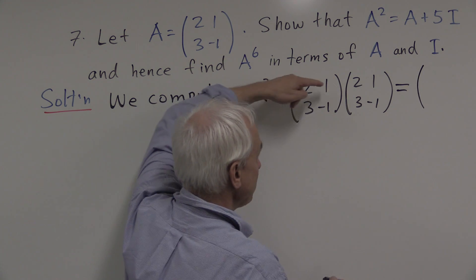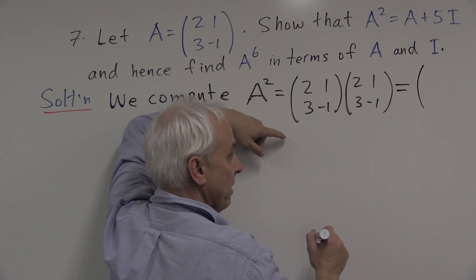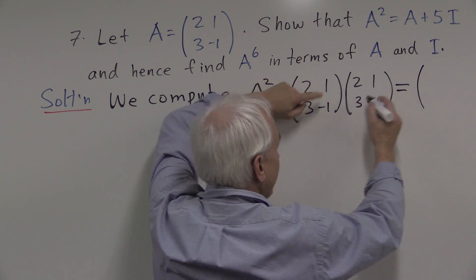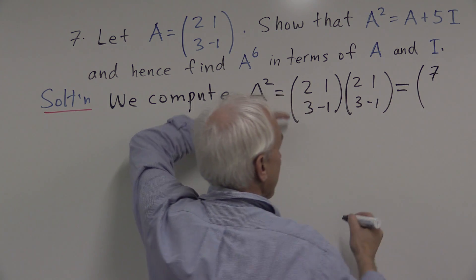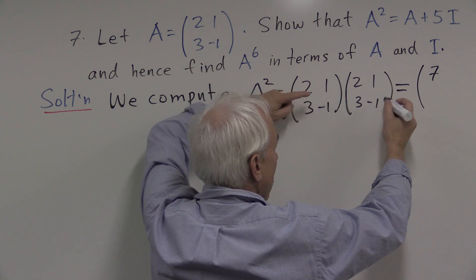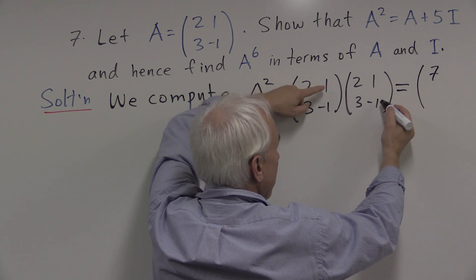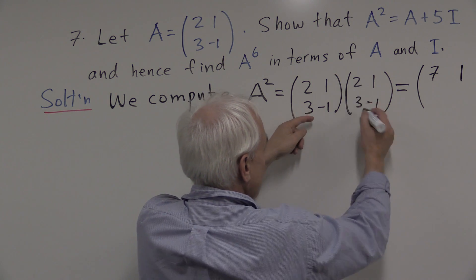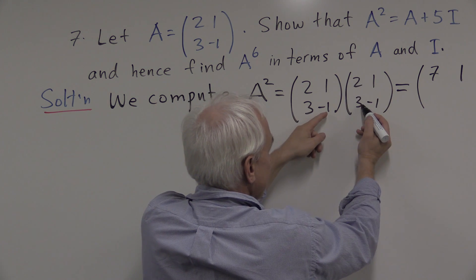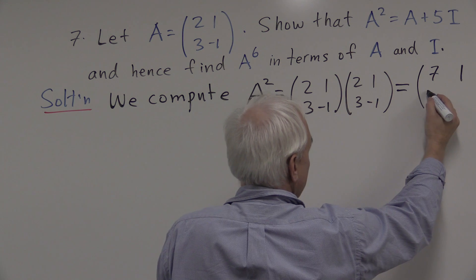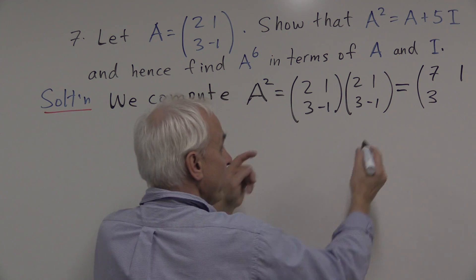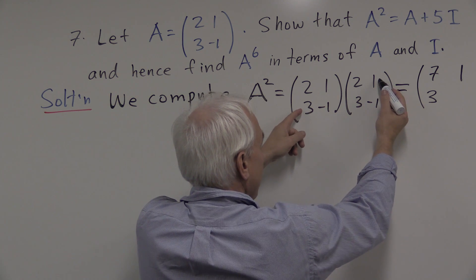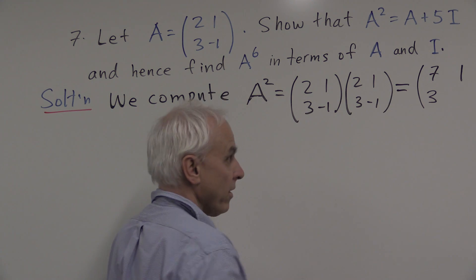How do we get the entries? We take rows of the first matrix and multiply them by columns of the second matrix. So first row times first column is 4 plus 3, that's 7. First row times second column is 2 minus 1, that's 1. Second row times first column is 6 minus 3, which is 3. And then the last entry is the second row times the second column, which is 3 plus 1, which is 4.